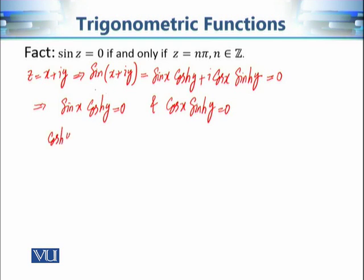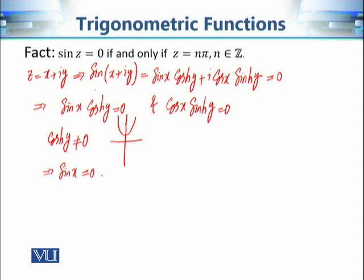From the first equation: cosh(y) is never zero — its graph, a parabola-like curve, never crosses the x-axis — so we must have sin(x) = 0, which means x = nπ from real analysis.